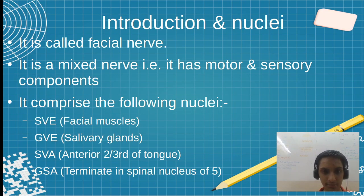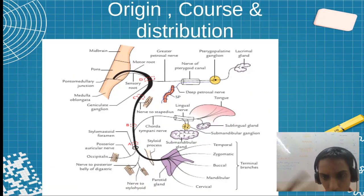Now let us see origin, course and distribution. You can see this pontomedullary junction from which we have the motor root and sensory root. This thick black line you are seeing is the motor root, the thin black line is the sensory root.